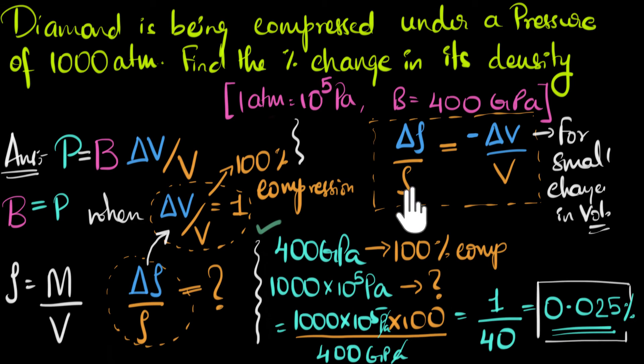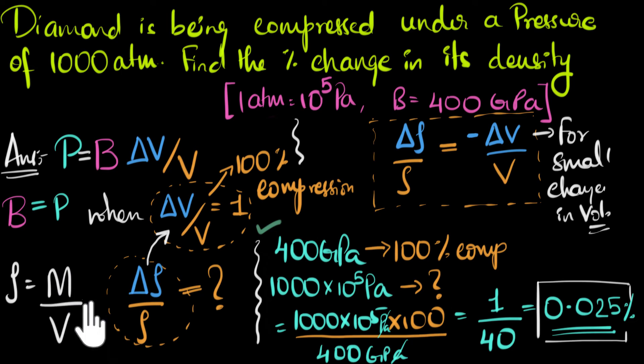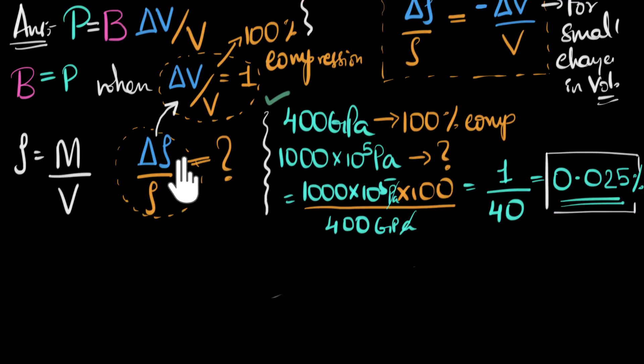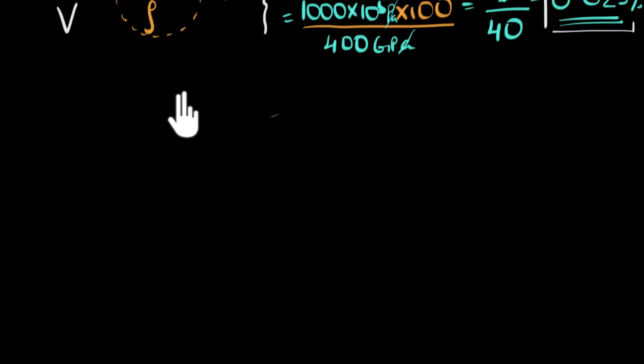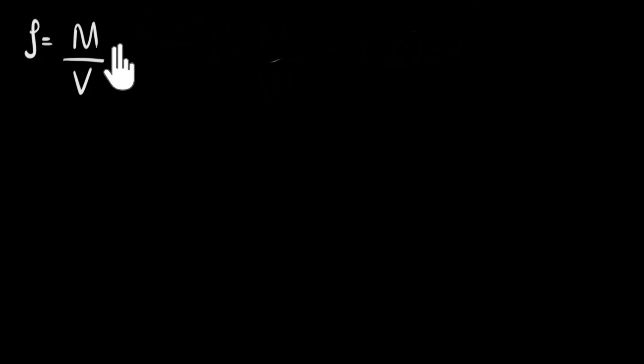We still have one last thing to do — we need to prove that delta rho over rho equals delta V over V. It'll be a great idea to pause the video and try this yourself first. We know that density is mass over volume, so let's start with that connection and work on a fresh page.